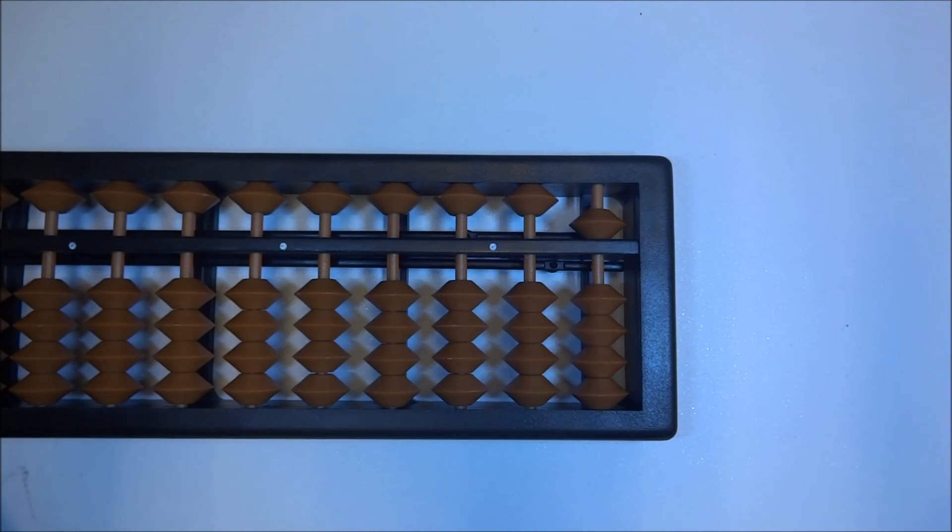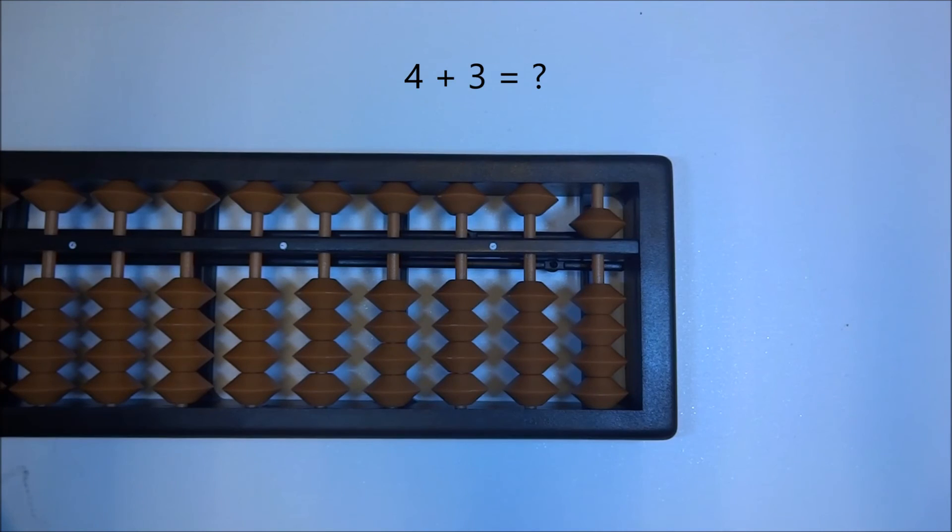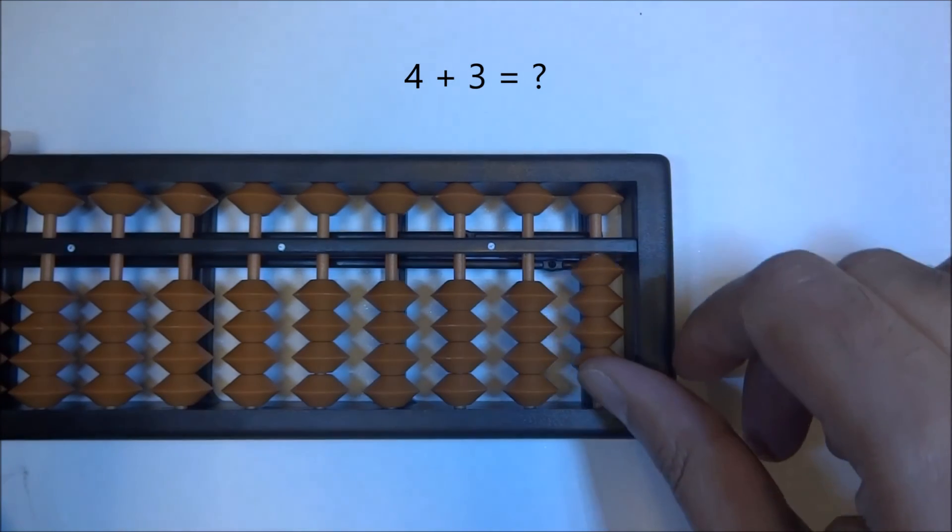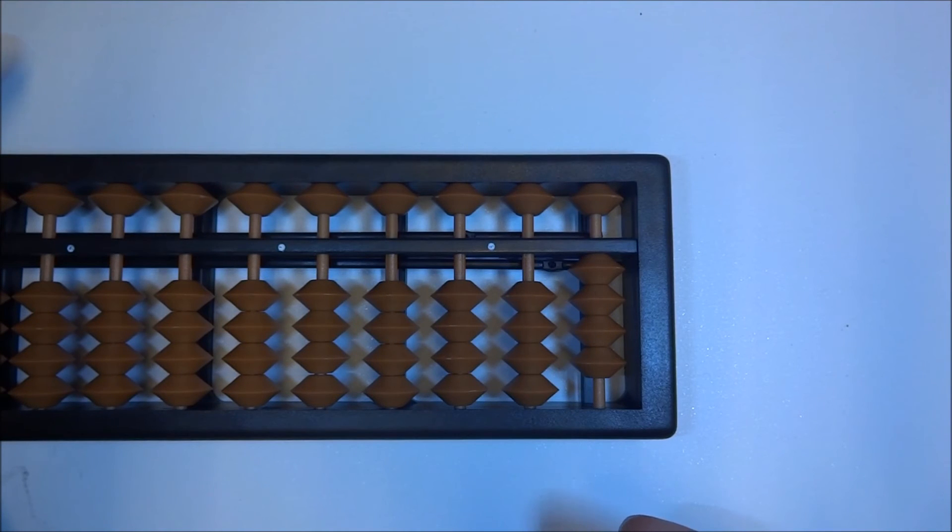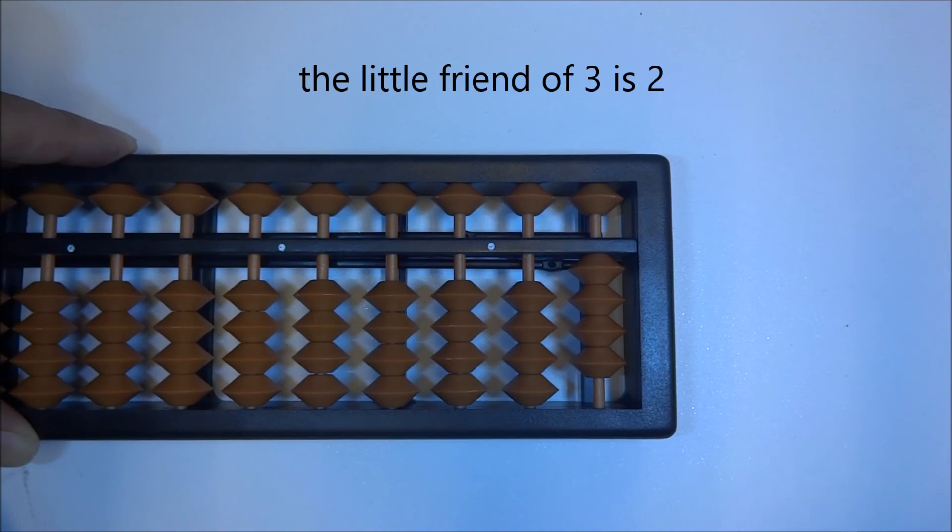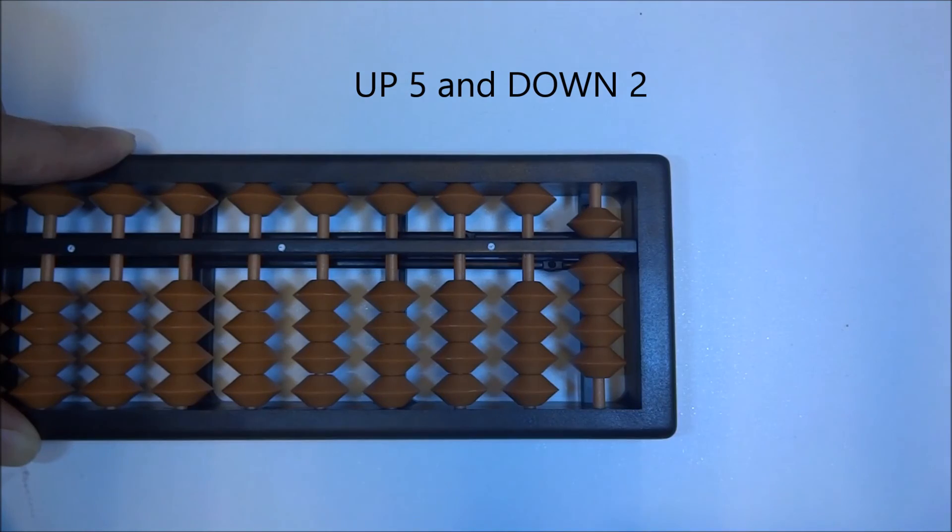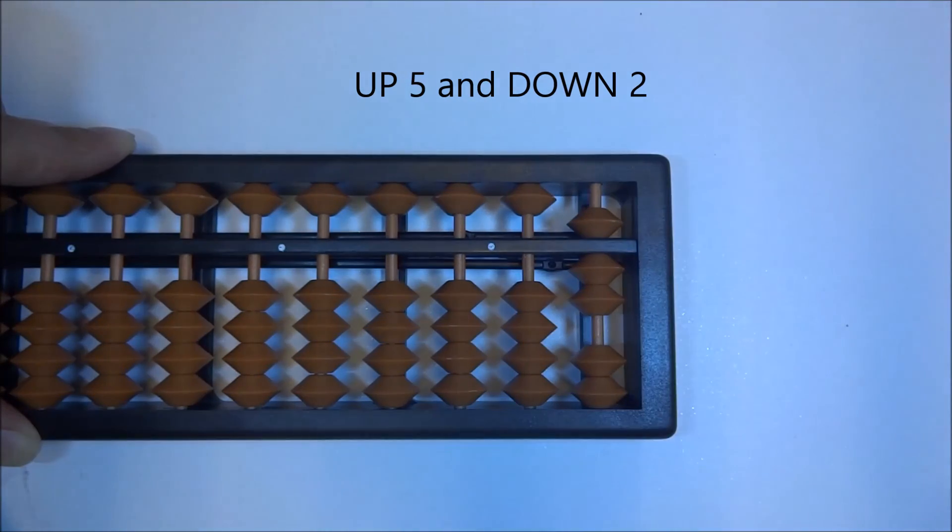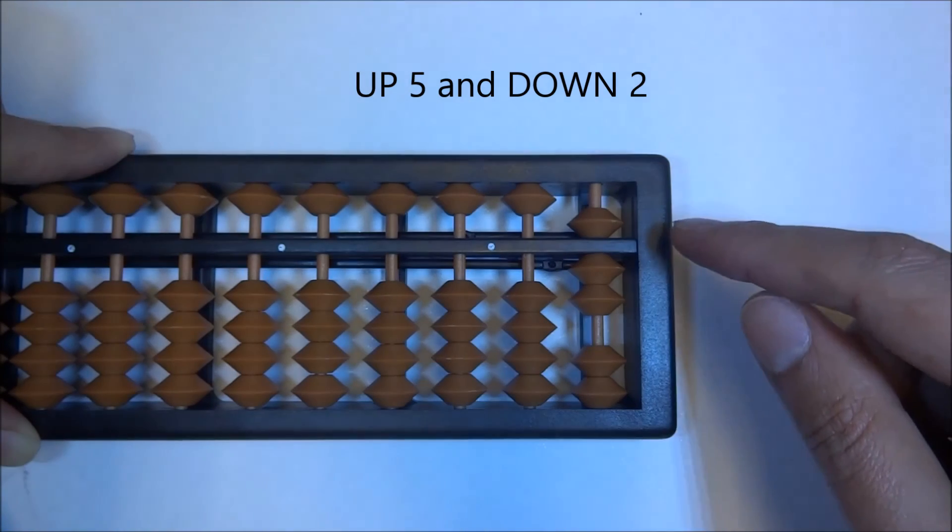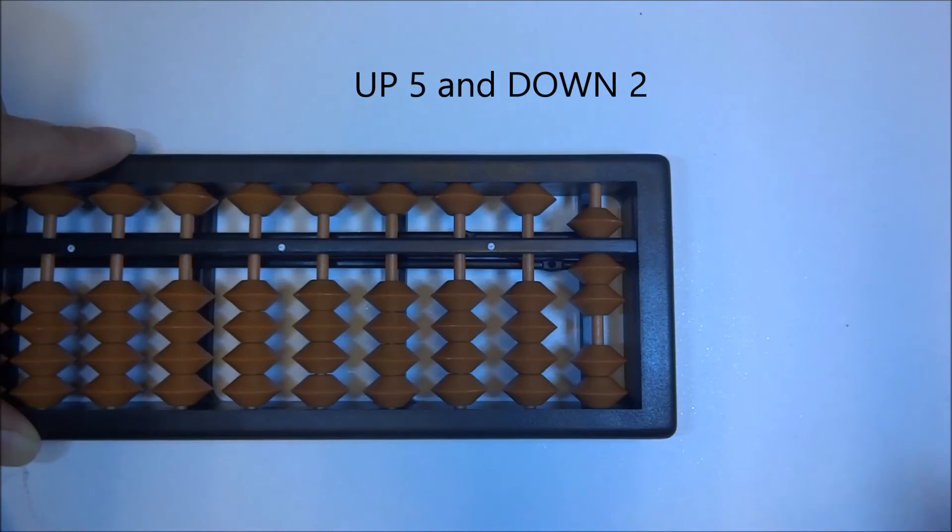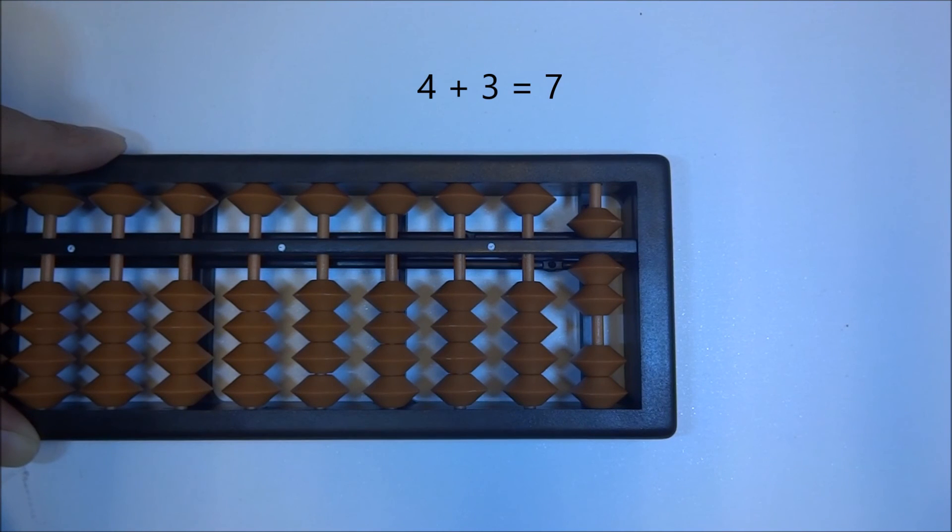Now let's go ahead and try one more. What is 4 plus 3? 4 plus 3. So up 4. Wow, we don't even have a single bead left. 4 plus 3. So what's the little friend of 3? 2. So let's see what turns out to be. Up 5 and down the little friend, which is 2. Down the little friend. What are we left with? 5 plus 1 plus 1, 7. 4 plus 3 is 7.